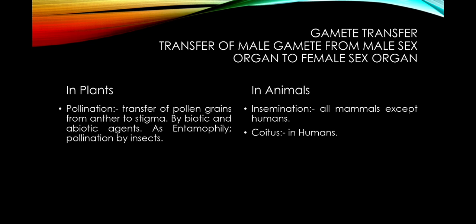Gamete transfer means the transfer of the male gamete from the male sex organ to the female sex organ. In case of plants, this process is called pollination — the transfer of pollen grain from the stamen to the stigma — carried out with the help of both abiotic and biotic factors. For example, pollination carried out by insects is called entomophily. In case of animals, the transfer of gamete from the male organ to the female organ is called insemination, but in case of humans it is called coitus or sex. During coitus, the male organ sends sperm into the female body, where the sperm travels toward the egg for fertilization.